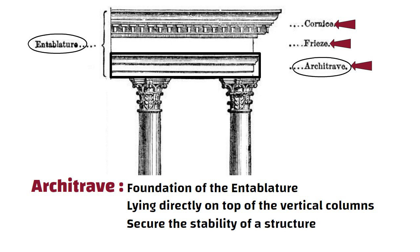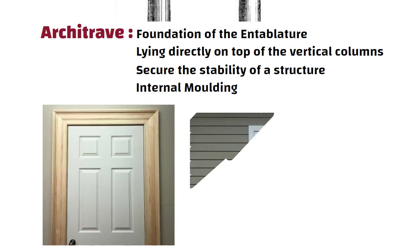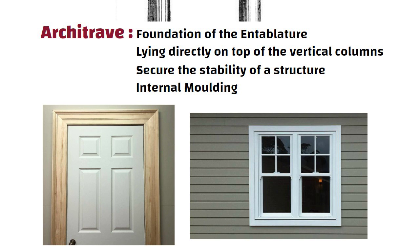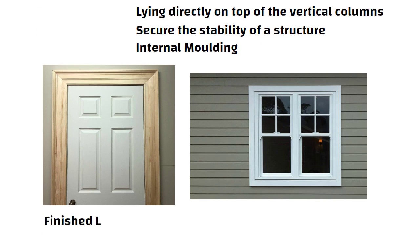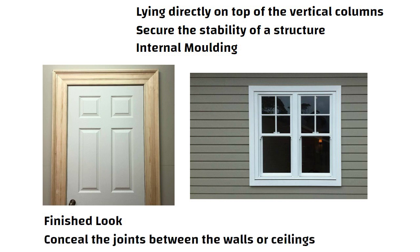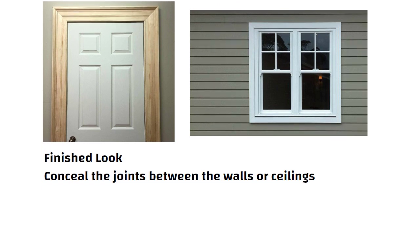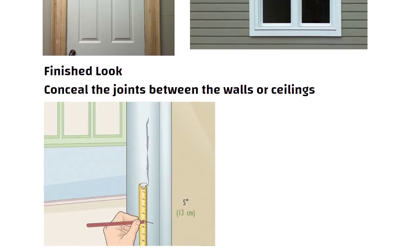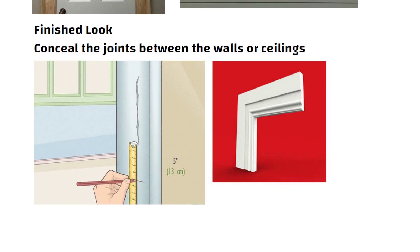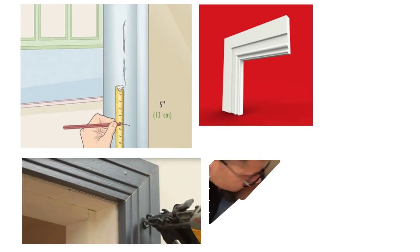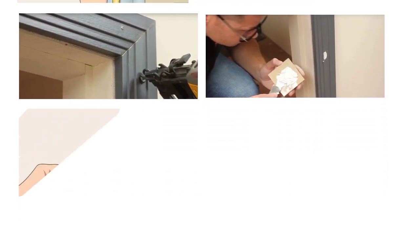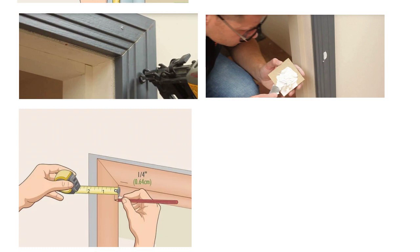In modern construction, an architrave is an internal molding used to surround doors, windows, or other openings. It is used to give the openings a finished look and conceal the joints between the walls or ceilings enclosing the opening. Once the architrave is measured and cut to the right size, it is attached to the door frame using nails or adhesive. The corners of the architrave are carefully mitered to ensure a seamless fit.